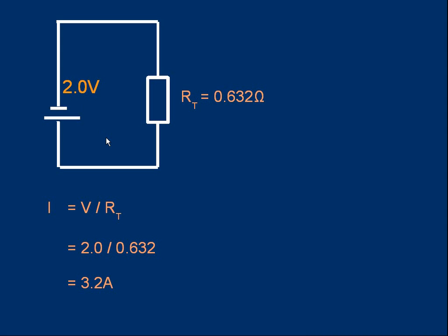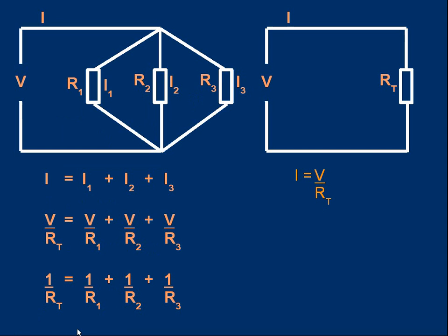Let's derive the formula. The top-left circuit shows three resistors in parallel — R1, R2, R3 — with currents I1, I2, I3, voltage V applied, and total current I before it splits. We want to find single resistance RT with the same effect. In the right-hand circuit, the current I = V/RT, since current equals voltage over resistance.